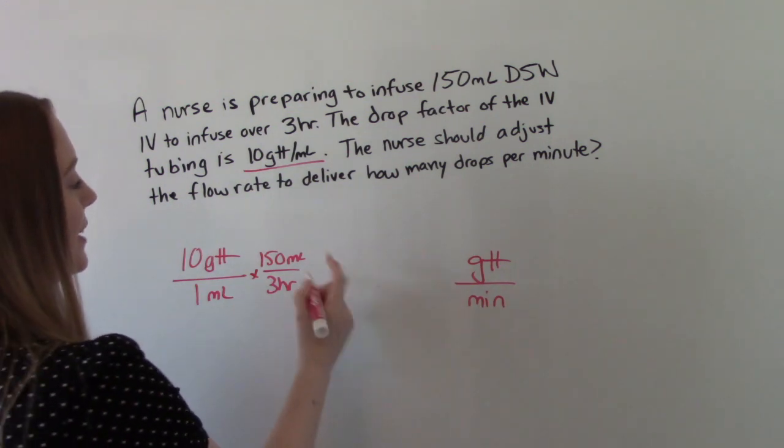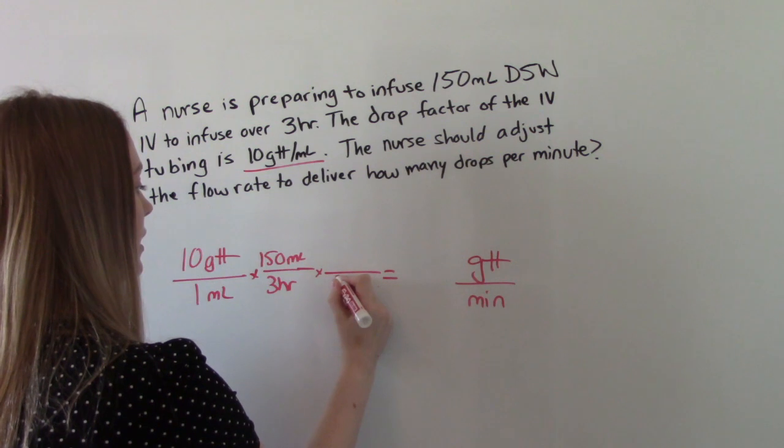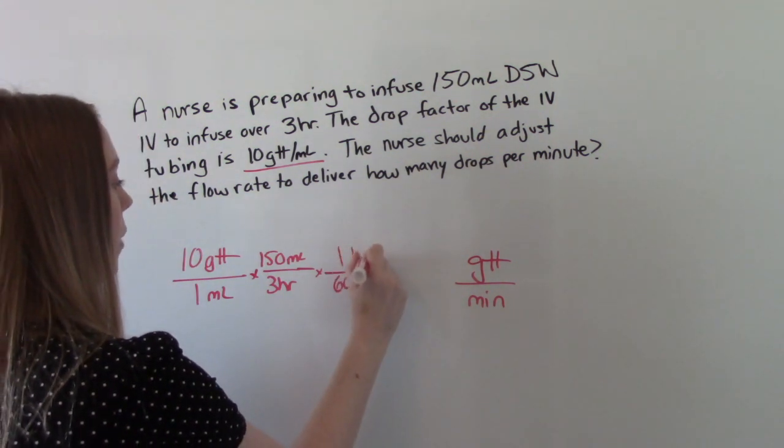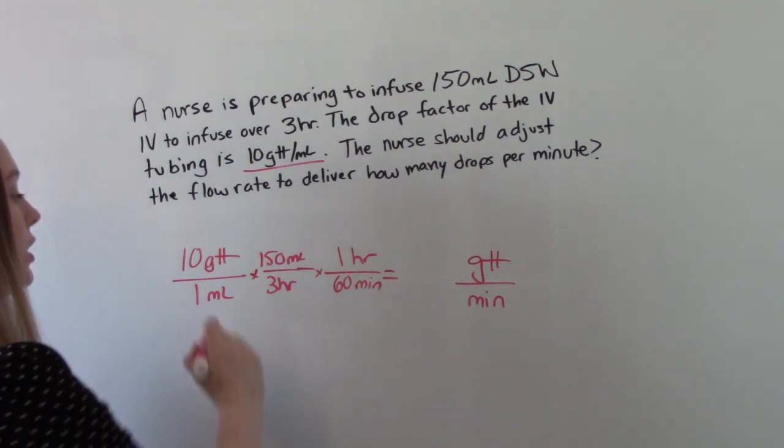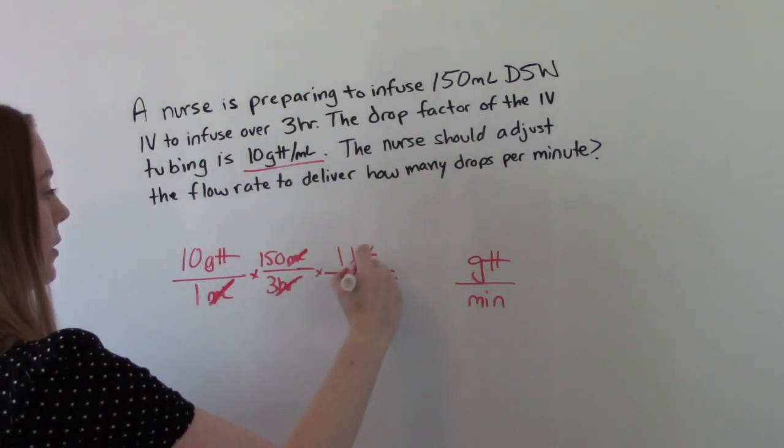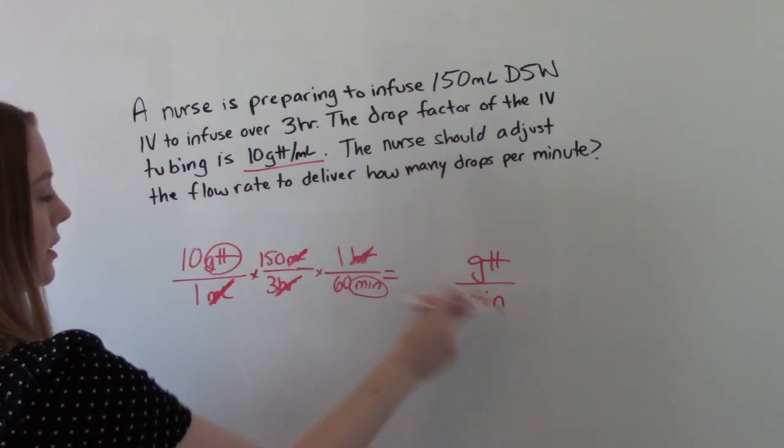And then we need to convert hours to minutes. So 60 minutes in one hour. So we will cancel out our ml's. We'll cancel out our hours. We'll end up with drops in our numerator and minutes in our denominator.